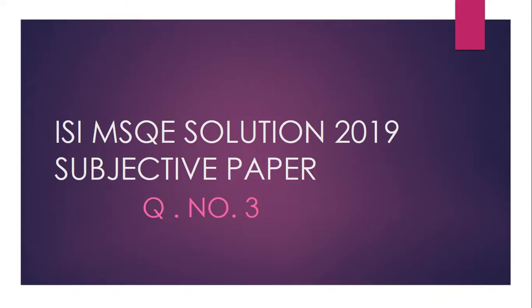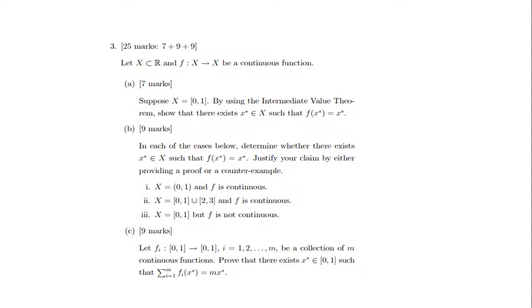Let's move on. X is a subset of R such that f: X → R is a continuous function, and f maps X to X, meaning it is a 1-to-1 mapping. Suppose X is the closed interval [0,1]. Using the Intermediate Value Theorem, prove that there exists some x* such that f(x*) = x*.